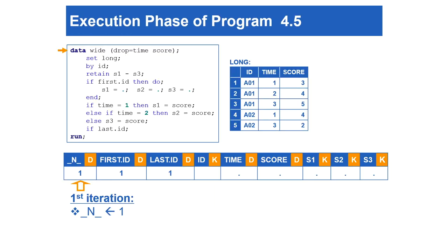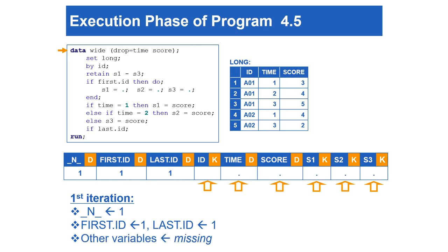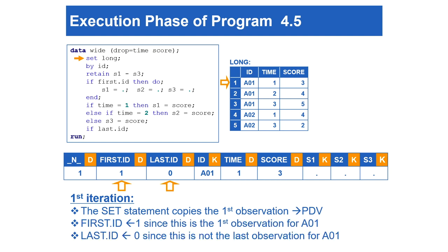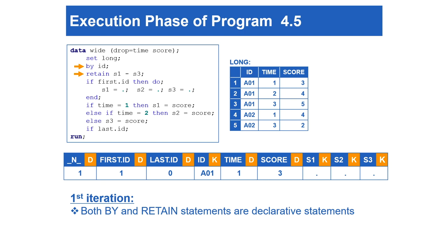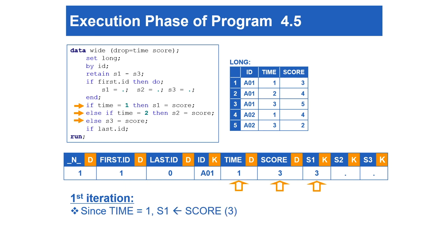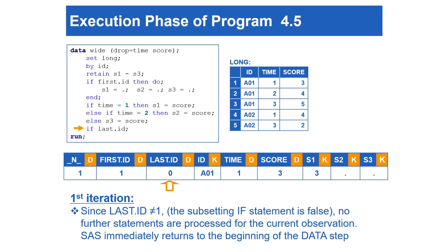Notice that subject A02 is missing one observation for time equaling 2. The value of S2 from the previous subject A01 would be copied to the wide dataset for A02 instead of a missing value, because S2 is being retained. To avoid this problem, we need to initialize S1 to S3 to missing when processing the first observation for each subject. Program 4.5 begins by sorting the long dataset by id and time. Sorting the time variable within each id is important because it ensures the horizontal order of S1 to S3 in the wide dataset for each subject can be matched correctly with the vertical order of score in the long dataset.